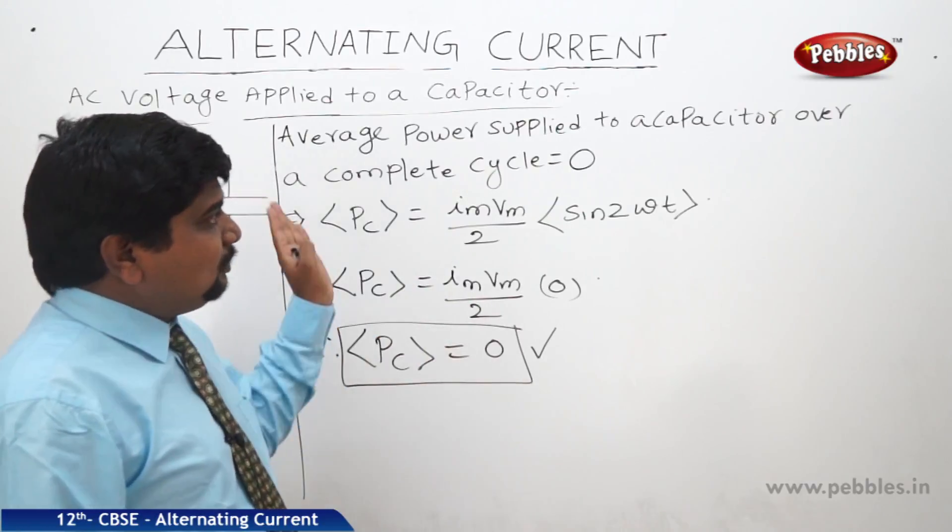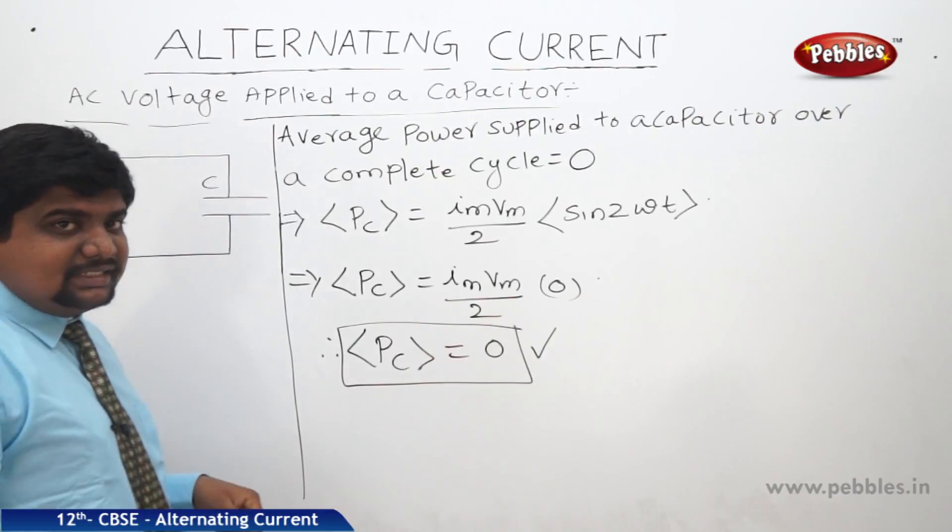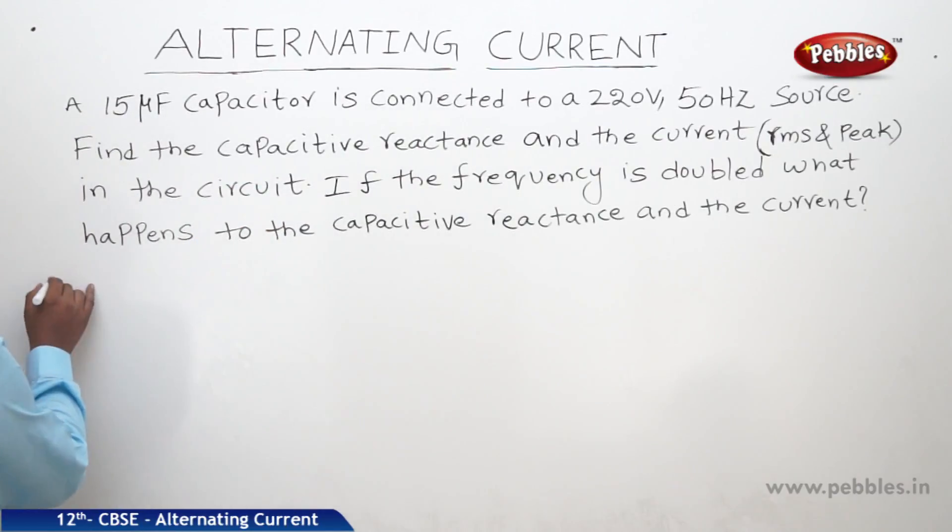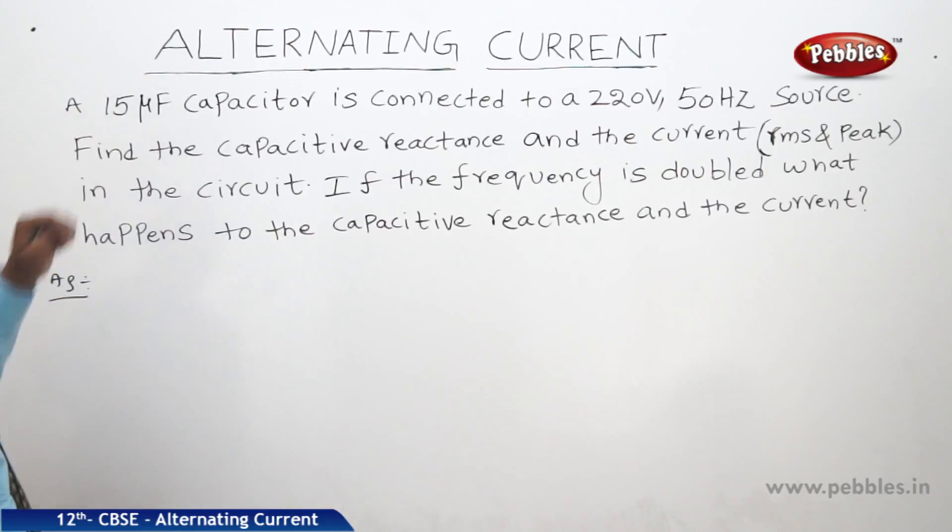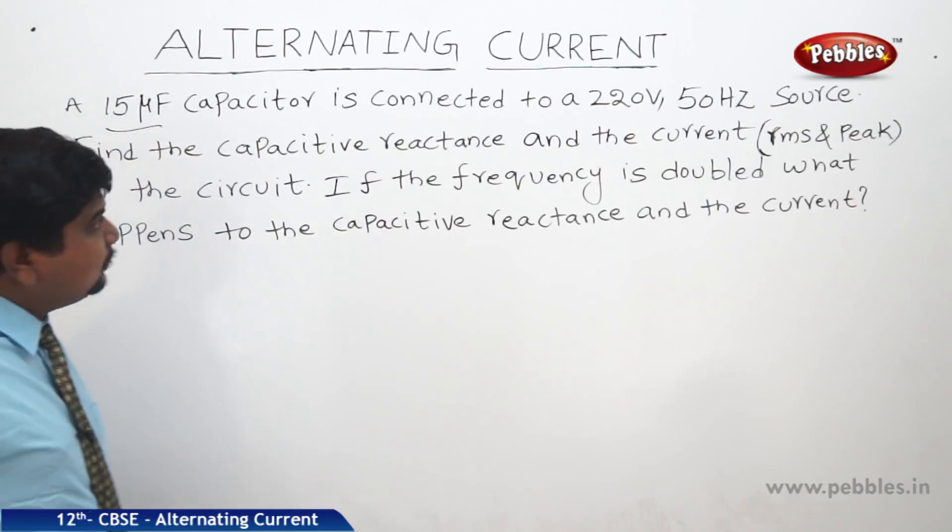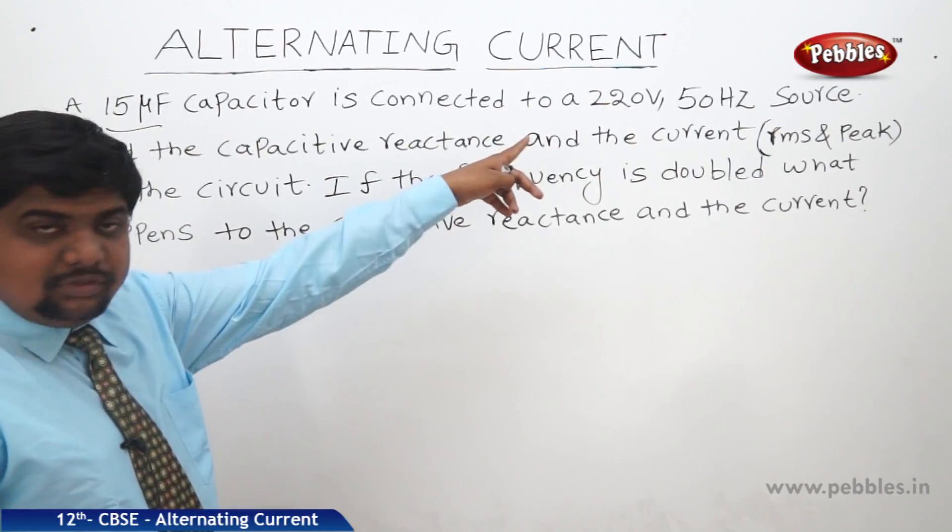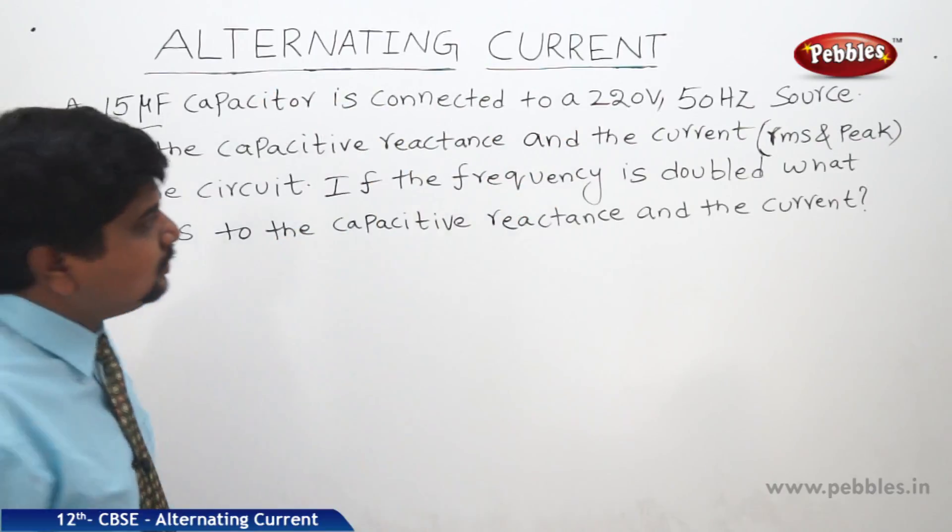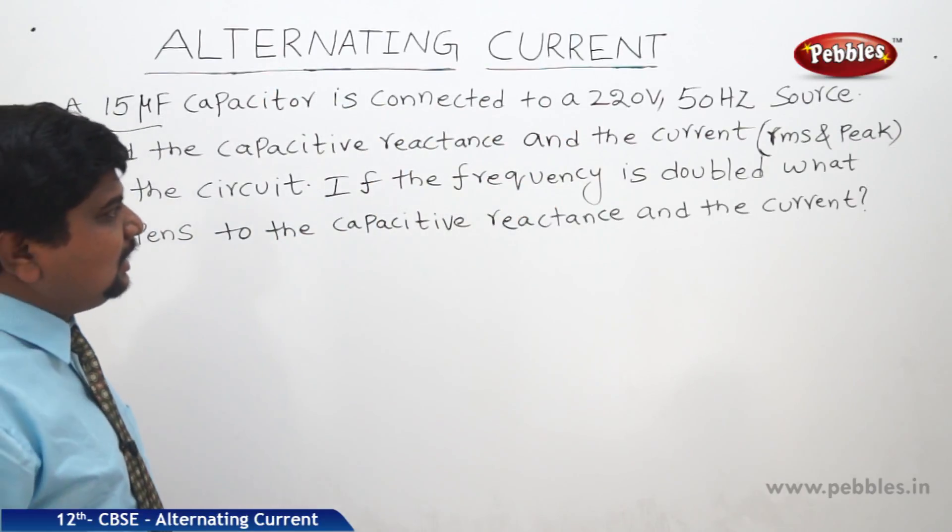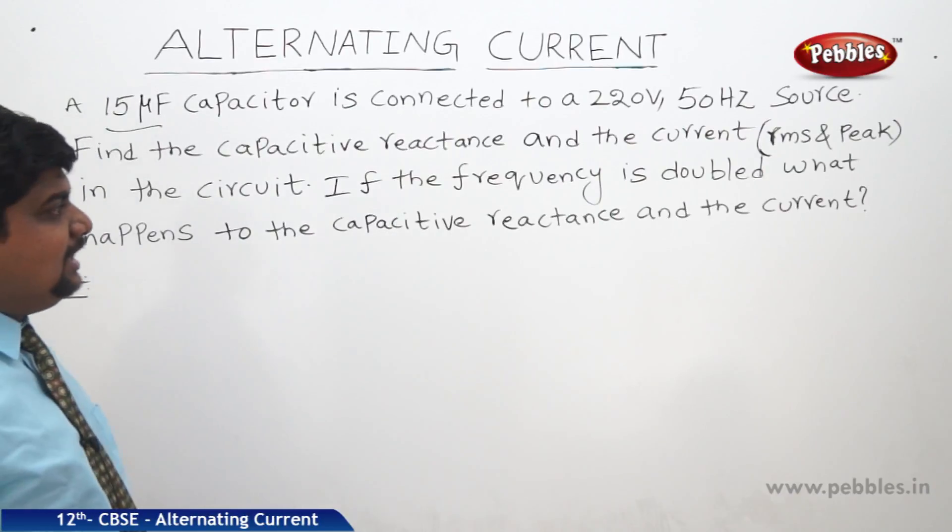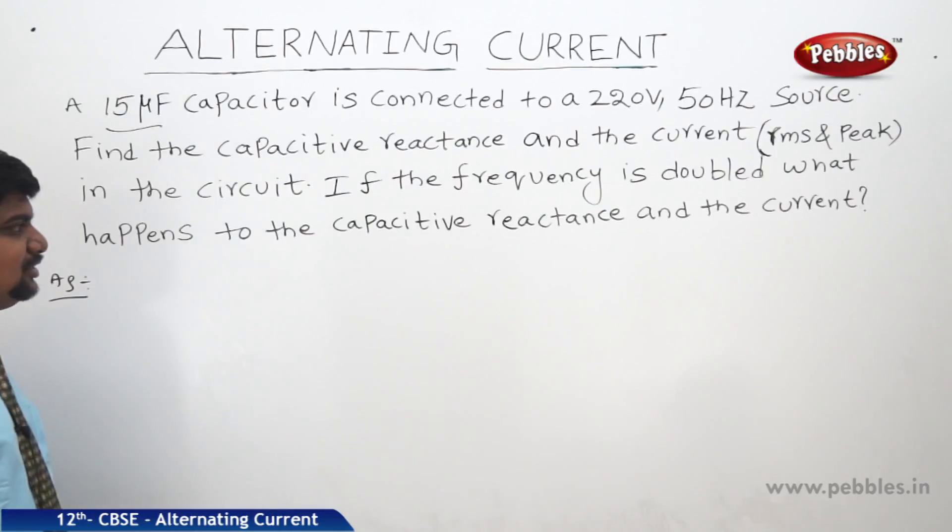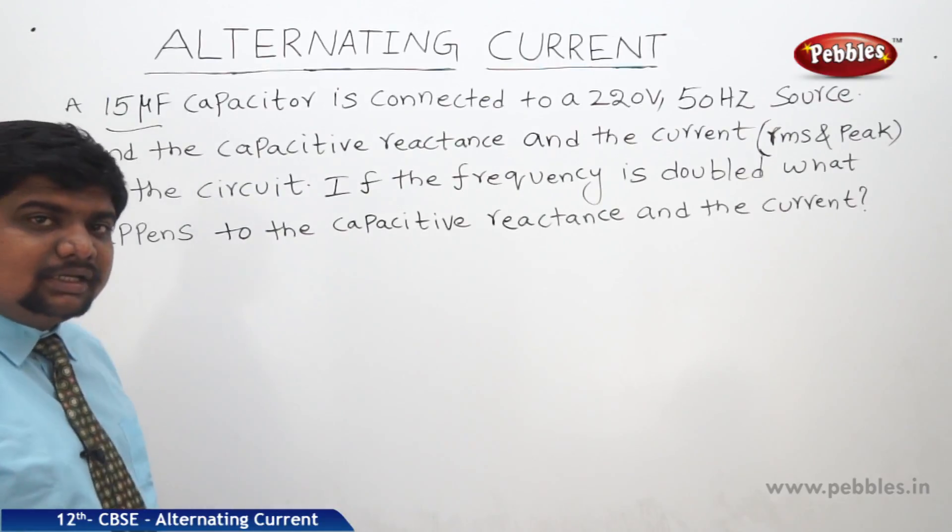Now we will see one problem based on capacitive reactance. A 15 microfarad capacitor is connected to a 220 volts and 50 Hz source. Find the capacitive reactance and the current, RMS and peak, both in the circuit. If the frequency is doubled, what happens to the capacitive reactance and the current?